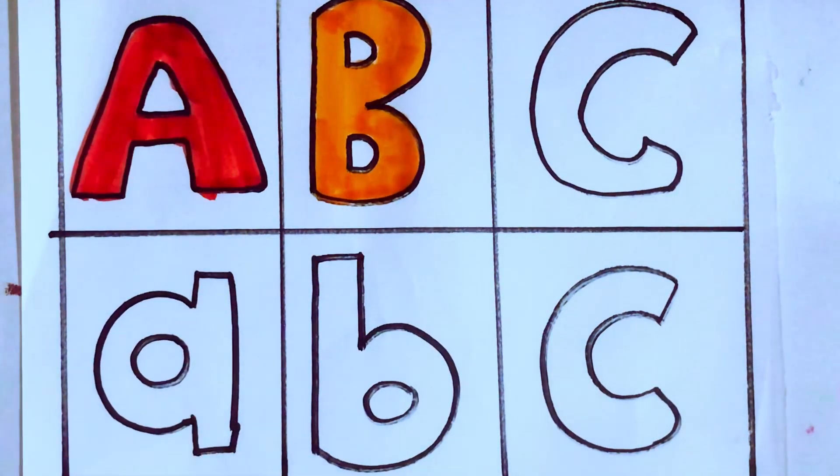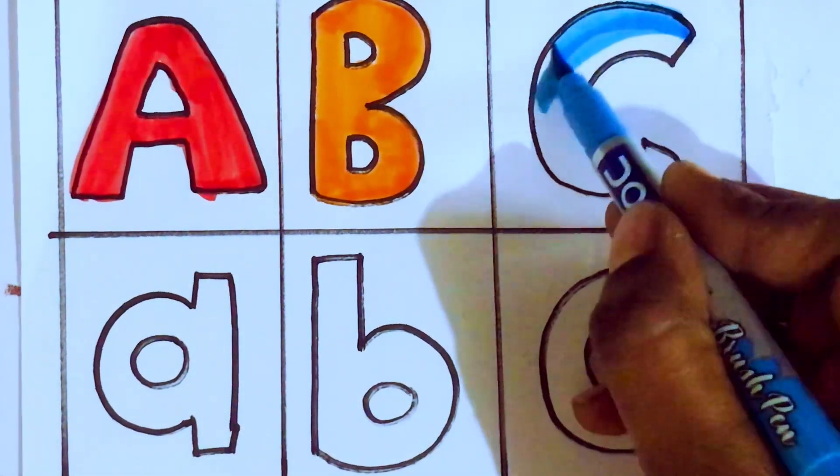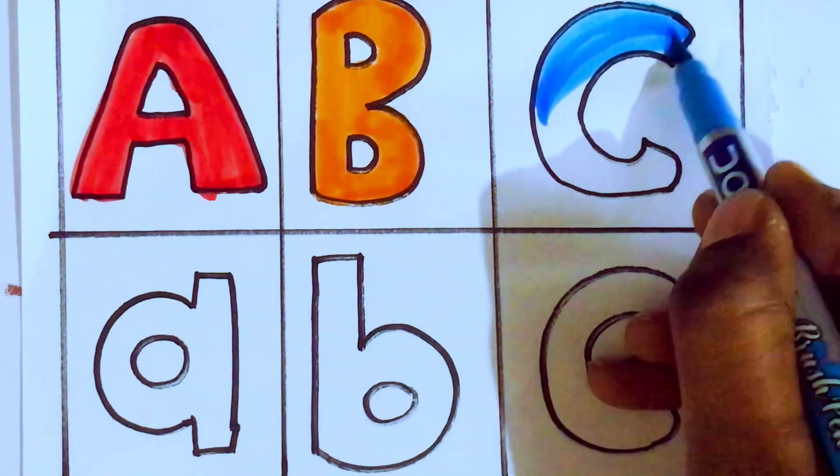Okay, blue color. C. Which letter kids? C. C for cat. C, A, T. Cat.